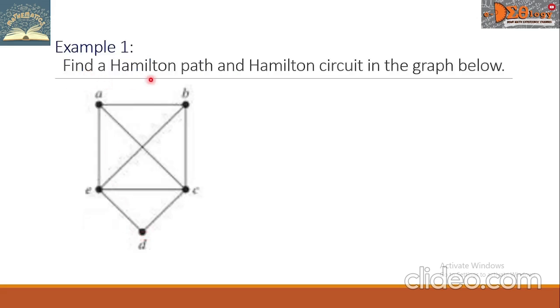Example 1. Find a Hamilton Path and Hamilton Circuit in the graph below. This is our graph. For the Hamilton Path, it is from A going to B, C, D, and E. For Hamilton Circuit, it starts with A, B, C, D, E, then A.